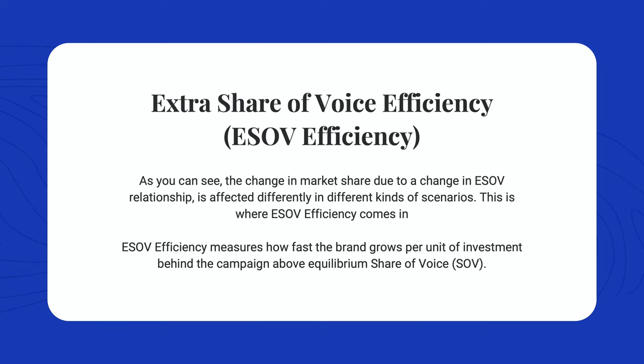The change in market share due to the change in extra share of voice is affected differently in different kinds of scenarios, and this is where the next measure — ESOF efficiency — comes in. ESOF efficiency measures how fast the brand grows per unit of investment behind the campaign above the equilibrium share of voice. You just need to find out what factors are leading to an improvement in your ESOF efficiency and then focus your efforts on those factors. There's a lot more work done on the factors which improve ESOF efficiency by Bennett and Field at the IPA — check out their work on the IPA website or buy their books from Amazon.